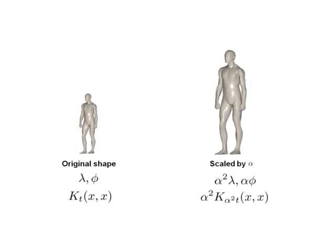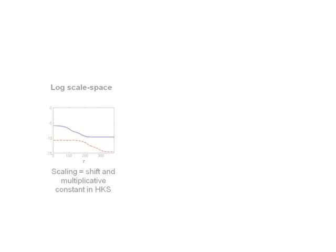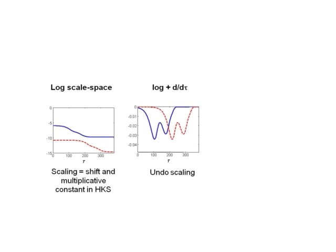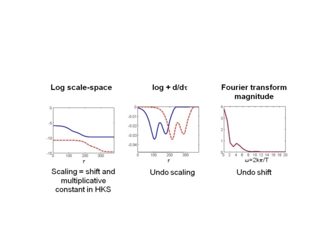We propose a scale-invariant version of heat kernel signatures. By using exponential diffusion scale space, shape scaling results in translation in the scale space. This translation is undone using the Fourier transform.